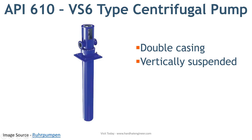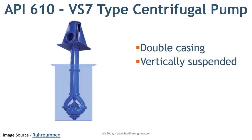The last API VS type pump is VS7. VS7 uses a volute casing design as compared to VS6, while all other factors are similar to VS6.